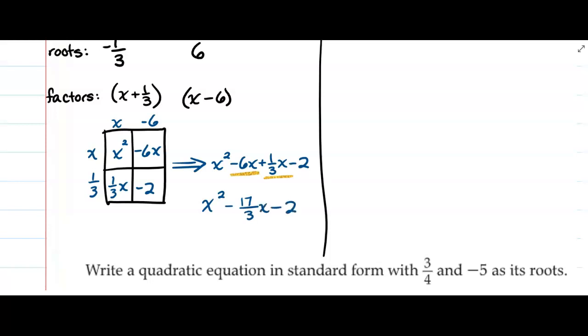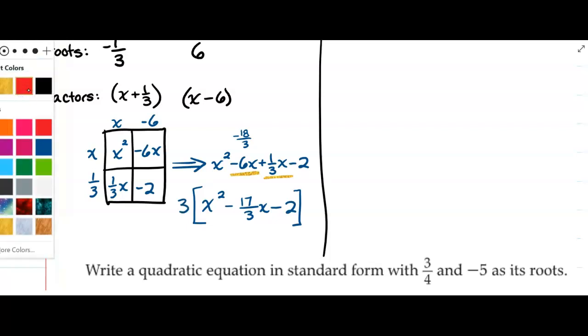Because another name for negative 6 is negative 18/3, plus 1 makes negative 17. But the problem is we cannot have a fraction to be in standard form, so to eliminate that 3 in the denominator I'm going to multiply the entire equation by 3.